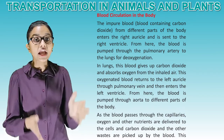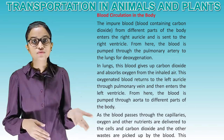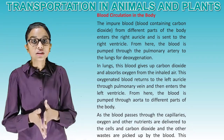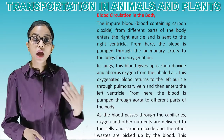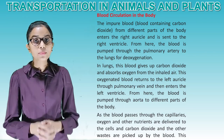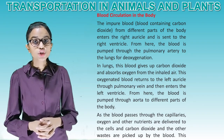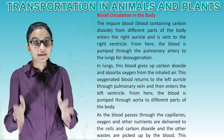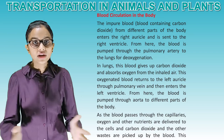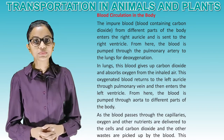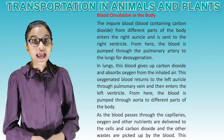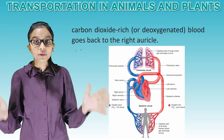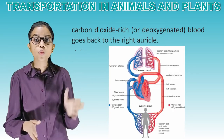Blood circulation in the body: the impure blood, containing carbon dioxide from different parts of the body, enters the right auricle and is sent to the right ventricle. From here, the blood is pumped through the pulmonary artery to the lungs for oxygenation. In lungs, this blood gives up carbon dioxide and absorbs oxygen from the inhaled air. This oxygenated blood returns to the left auricle through the pulmonary vein and then enters the left ventricle. From here, the blood is pumped through the aorta to different parts of the body. As blood passes through the capillaries, oxygen and nutrients are delivered to the cells and carbon dioxide and other wastes are picked up. This deoxygenated blood then goes back to the right auricle.